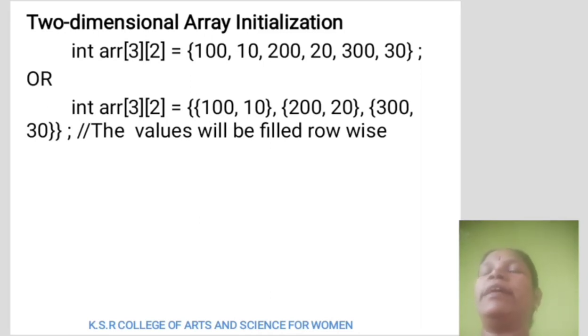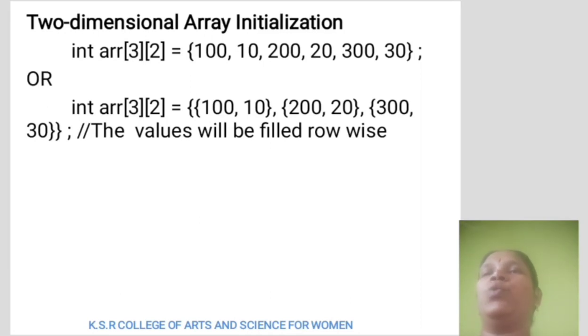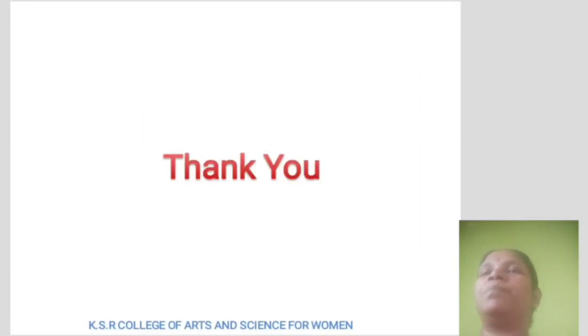Int is the data type. ARR is the variable name. 3 is the number of rows. 2 is the number of columns. Thank you.